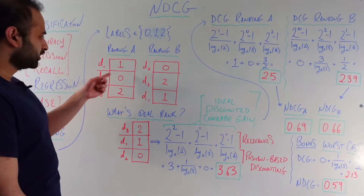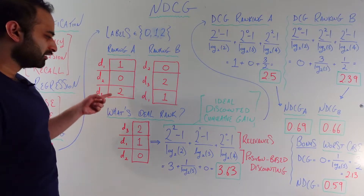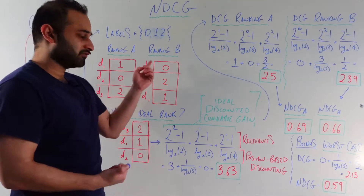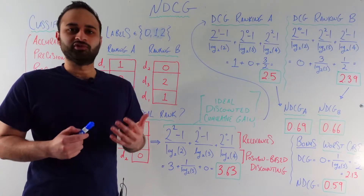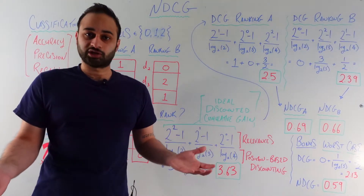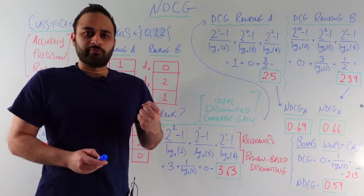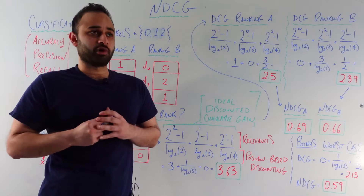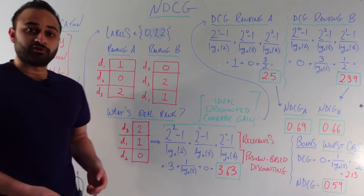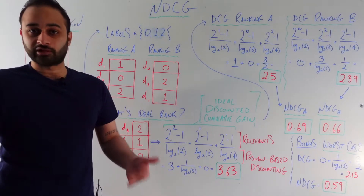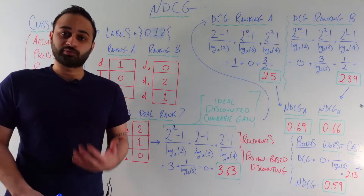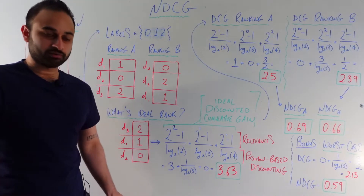Well it seems kind of ambiguous. If you look at ranking A, it's nice that it has a one up at the top, but it's putting the most relevant thing at the end, so that doesn't seem great. If you look at ranking B, it's putting the most relevant thing in position two, which is better, but at the same time there's a big fat zero at the top, so that's not good either. We need some kind of objective way to get a single number — a single metric — out of both of these that will tell us which is objectively better. But let's go to something in this problem that is definitely not ambiguous: what is the best possible ranking? That is obviously document three, document one, and then document two, with labels two, one, zero — perfectly descending order in terms of relevance. This is the best possible ranking because we're putting the most relevant thing in the first position, the next most relevant in the second position, and the least relevant in the last position.